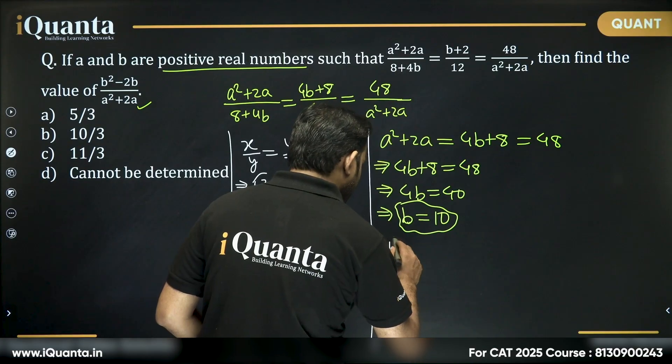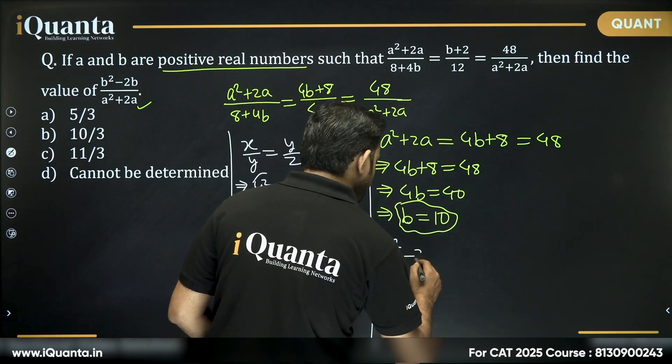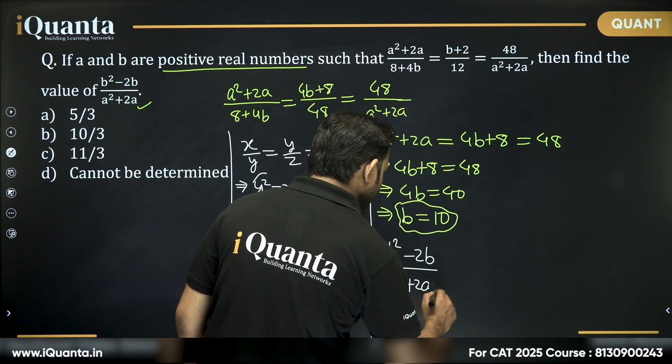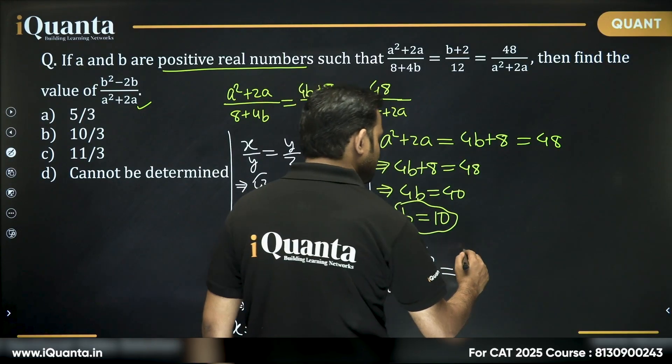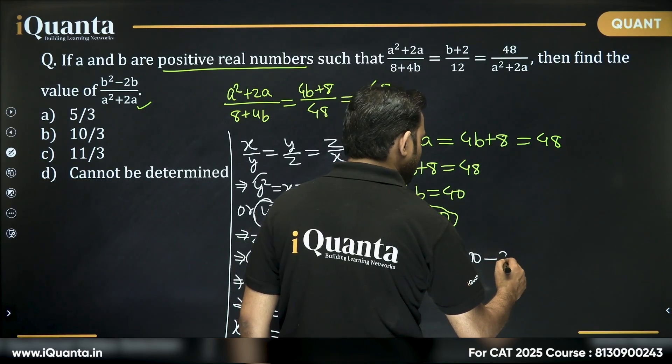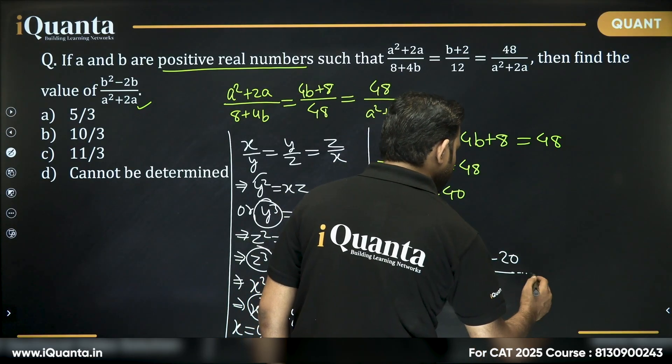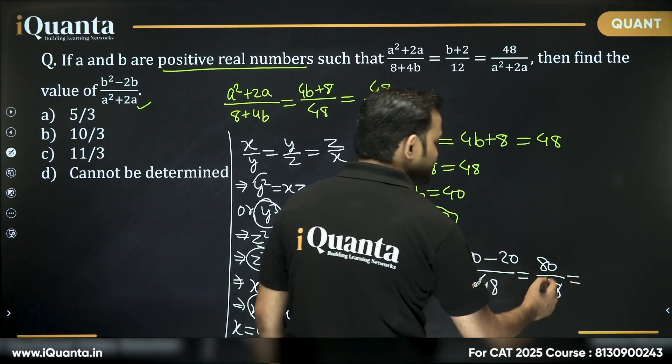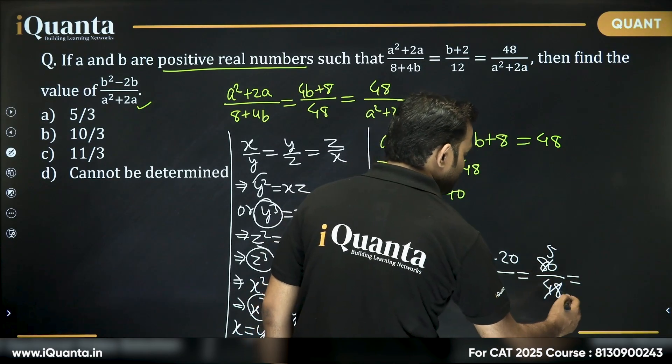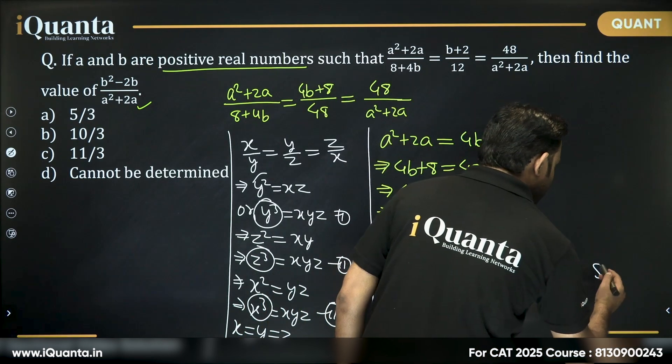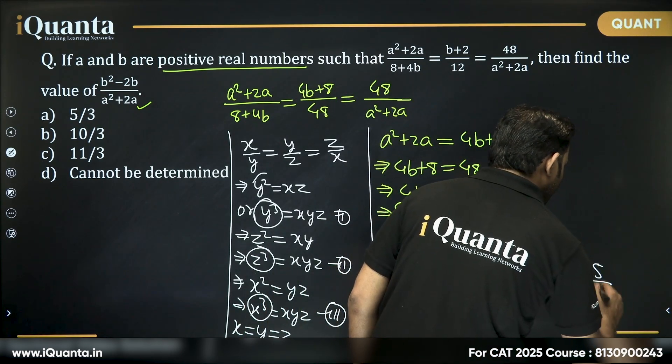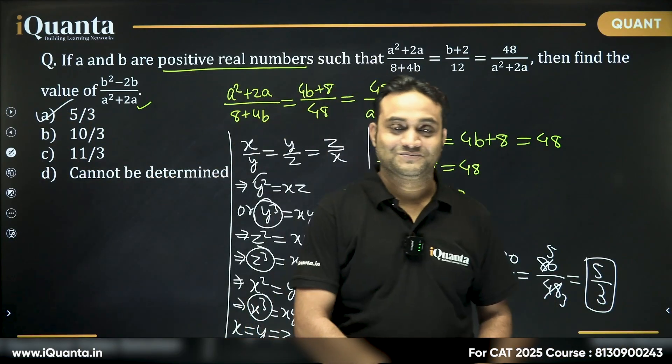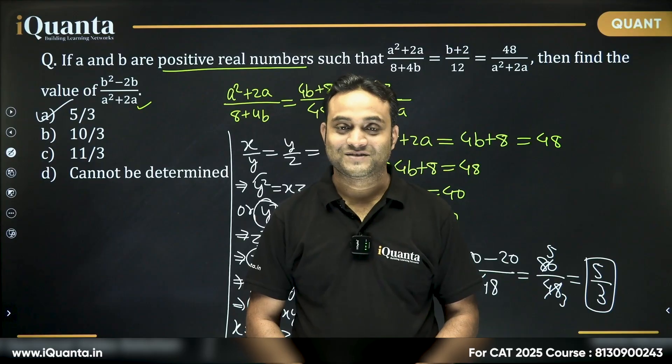So, b² - 2b divided by a² + 2a will be equal to b² will become 100 - 20 divided by 48, which will be equal to 80 divided by 48. This is 16 into 5, 48 is 16 into 3. So, our answer is 5 upon 3, which is option A. Such a good question, right? Thank you.